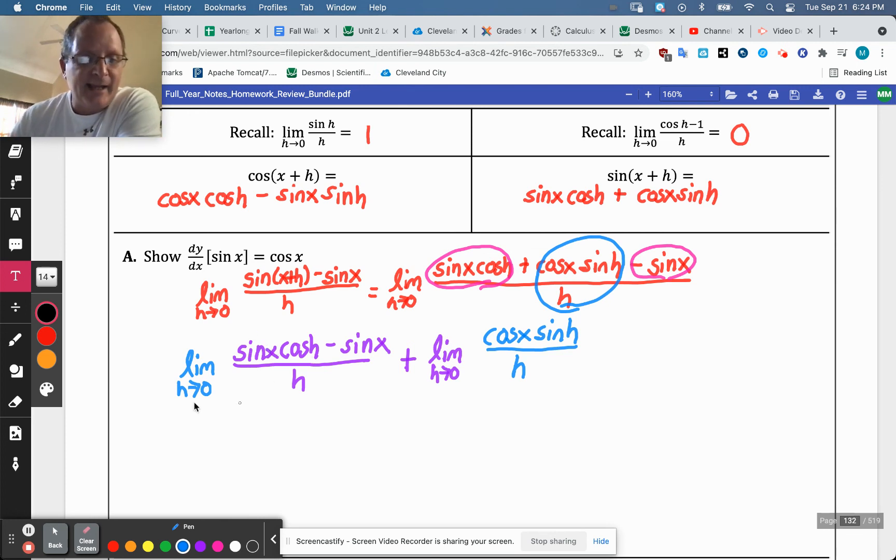Okay, and then over here, I can factor out a sine x, right? So I'm going to factor out a sine x. Since h is going to zero, that doesn't really affect anything, but I'll just go ahead. So the limit as h approaches zero. Factor out the sine x. So it's going to be sine x times this cosine h minus one, because I just took the sine x out, over h. So you know what's about to happen there. That's going to go to zero, and if that goes to zero, and they're multiplied together, that's going to kill that.